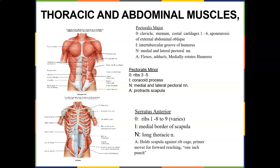Pectoralis minor is very tight if you have poor posture and rounded shoulders, so you'll find tenderness at the pec minor. It originates on ribs 3 through 5 and inserts at the coracoid process. Nerve supply is the medial and lateral pectoral nerves. Its action is to protract the scapula. Make sure you stretch out the pec minor, otherwise you'll get really rounded shoulders.